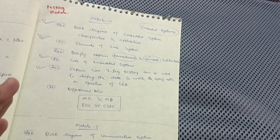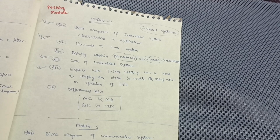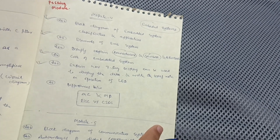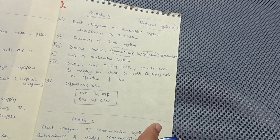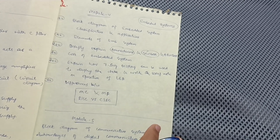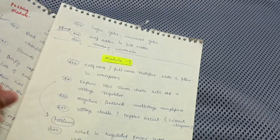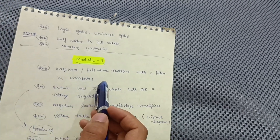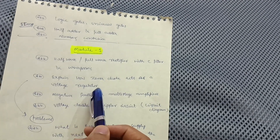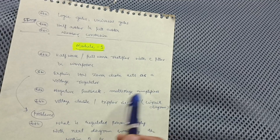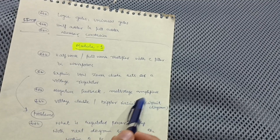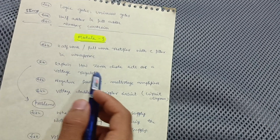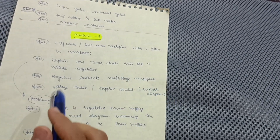Module 3 and Module 4 are the passing modules in this electronics subject. There are numerical problems as well, but don't worry — you can easily pass with the theory itself. In Module 3 you should go through the problems. For other modules, you don't need to attempt problems unless you find them easy. Module 1 requires you to cover half-wave and full-wave rectifiers with capacitor filter and waveforms — waveforms are very important.